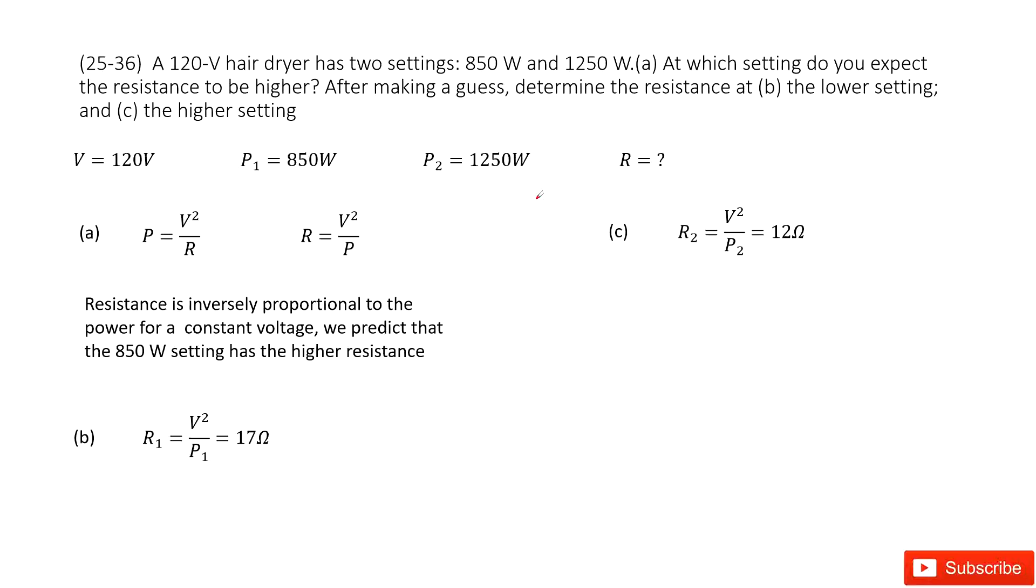Chapter 25 is about electric currents and resistance. So you can see we have a hair dryer. The potential difference is fixed, 120 volts.